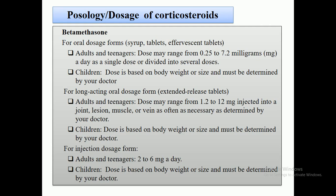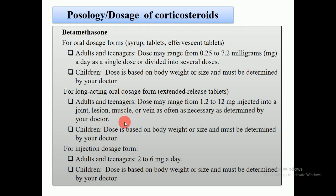For long-acting oral dosage forms — extended release tablets — for adults and teenagers, the dose may range from 1.2 to 12 mg injected into the joint, lesions, muscles, or vein as often as necessary, determined by your doctor. In children, the dose is based on body weight.